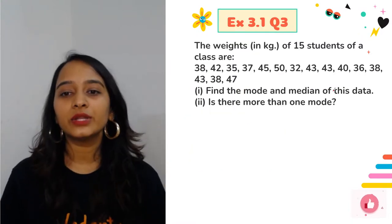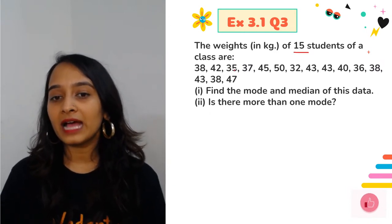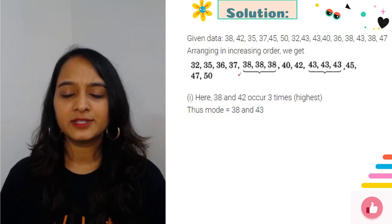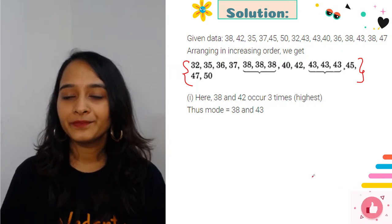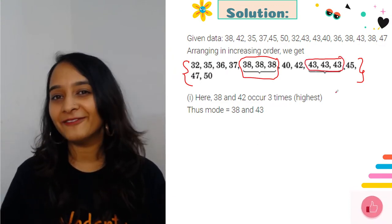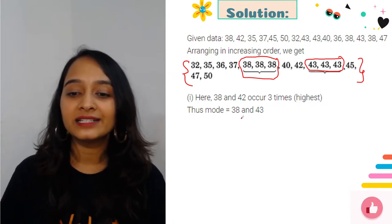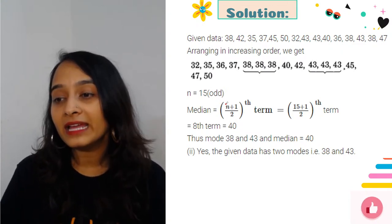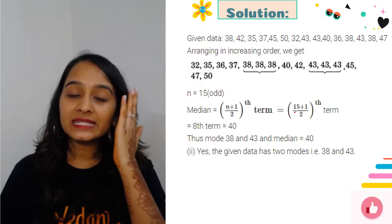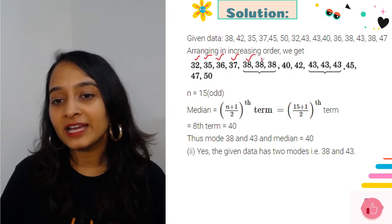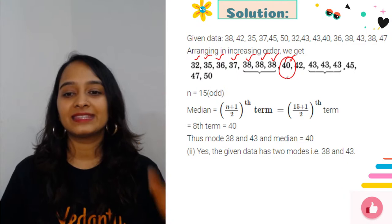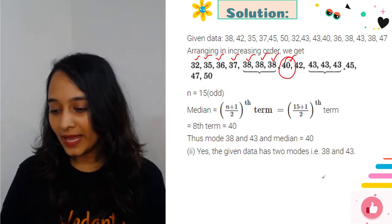Next question: The weights of 15 students of a class are given. Find the mode and median, and is there more than one mode? Mode is something that repeats itself the maximum number of times. Arrange the data in ascending order first. After arranging, 38 is repeating 3 times and 43 is also repeating 3 times. So yes, we can have two modes: 38 and 43. For the median, the number of observations is odd - n+1 divided by 2 = 16/2 = 8. The 8th term is 40. So the median is 40.